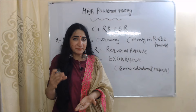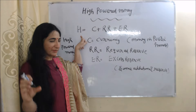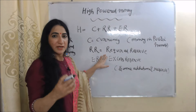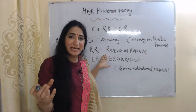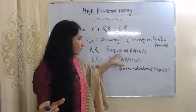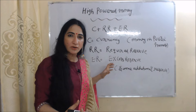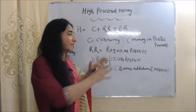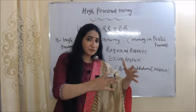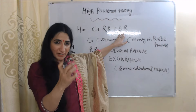Now we will see the formula of high powered money. H is equal to C plus RR plus ER. Here H is high powered money. C is currency — meaning money in public hands. RR is required reserve — commercial banks need to keep some money as a cash reserve, which is called required reserve. ER is excess reserve — commercial banks also keep some additional reserve, which is called excess reserve. Some part of high powered money goes to the public and some part goes to banks. C represents the part that goes to the public, and RR and ER represent the part that goes to banks.